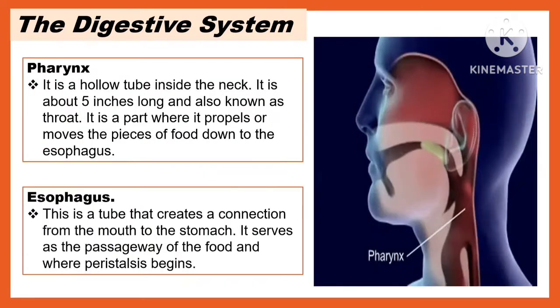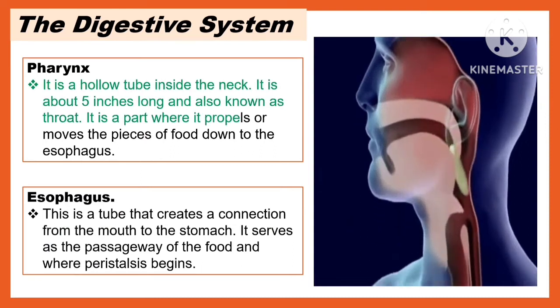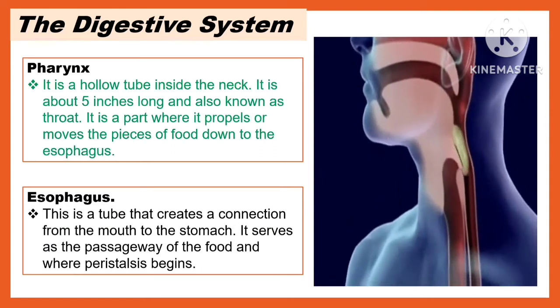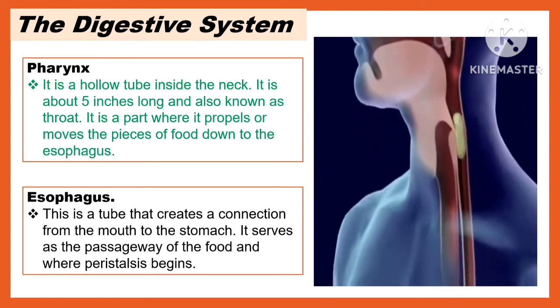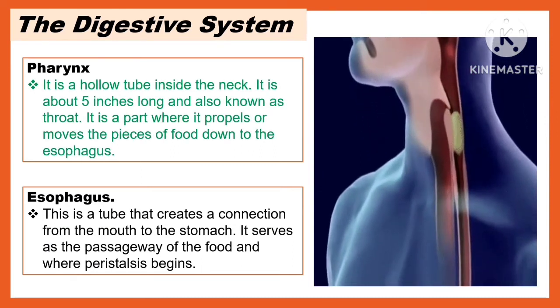Another part of the digestive system is the pharynx. It is a hollow tube inside the neck, about 5 inches long, and also known as the throat. It is the part where it propels or moves the pieces of food down to the esophagus.